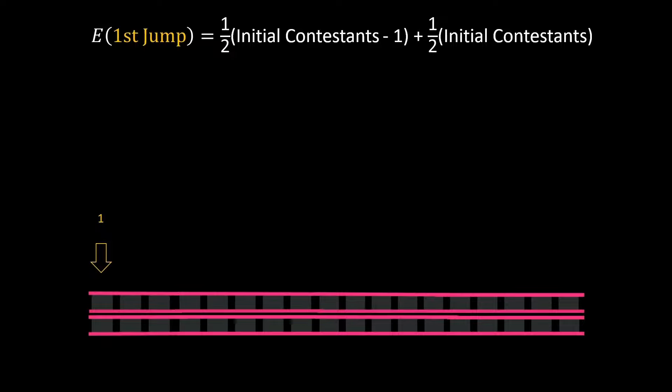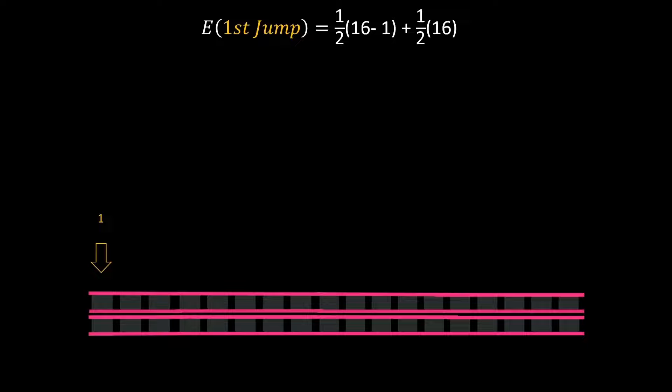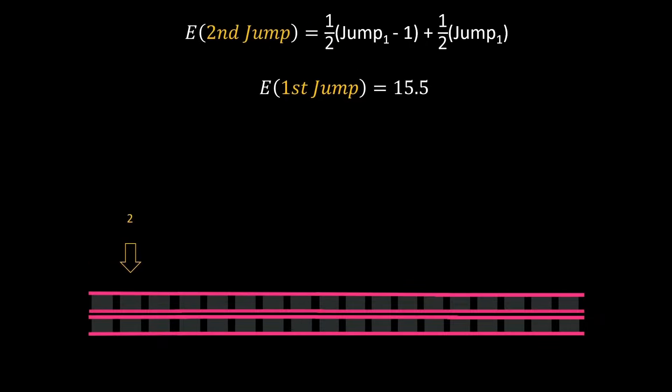Once again if we use numbers from the show the initial contestants become 16 and we get an expected survivor count of 15.5 for the first jump. Then we feed that value forward into the next formula and get the expected survivors of the second jump.